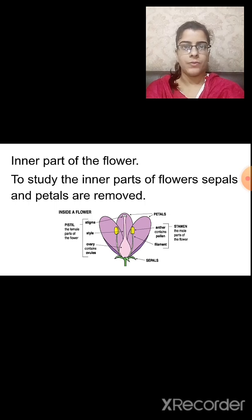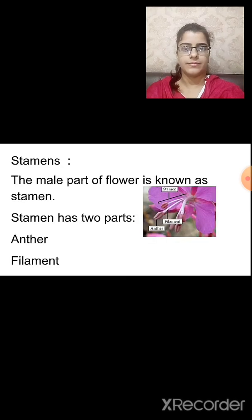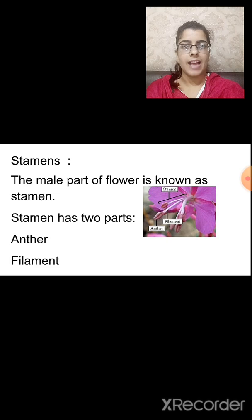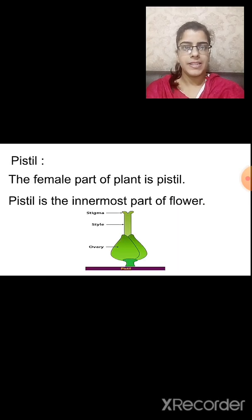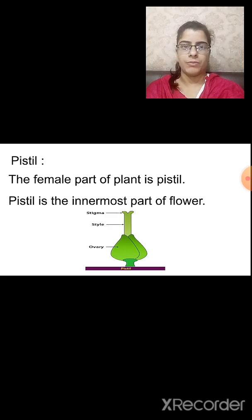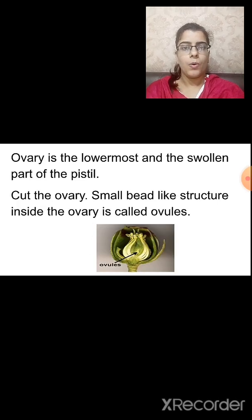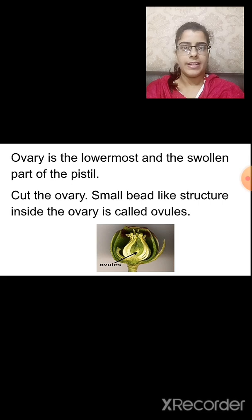To study the inner part of the flower, the sepals and petals are removed. The inner part consists of stamens and pistils. Stamens are the male part of the flower, and a stamen has two parts: anther and filament. The pistil is the female part of the plant, and it consists of ovary, style, and stigma. The pistil is the innermost part of the flower. The ovary is the lowermost and swollen part of the pistil. When we cut the ovary, we see small bead-like structures known as ovules.